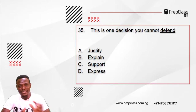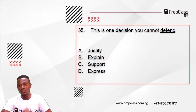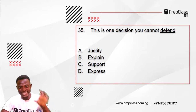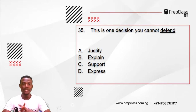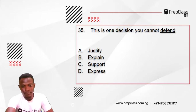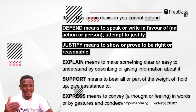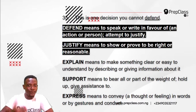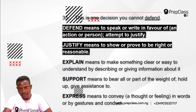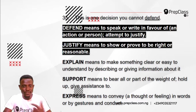Moving on, question 35. We are to select the option nearest in meaning to the underlined word as used in the sentence. Question 35 reads: This is one decision you cannot defend. The underlined word is 'defend.' Options: A: justify, B: explain, C: support, D: express. In this context, defend means to speak or write in favor of an action or person — you want to justify what you have done.